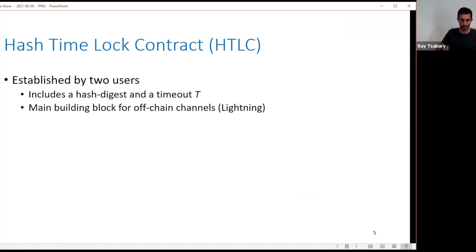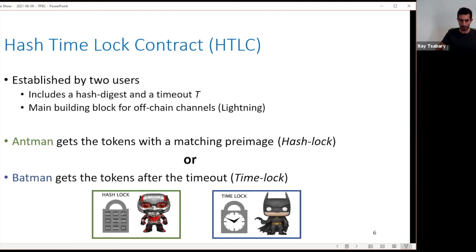HTLCs, which stands for hash time lock contracts, are contracts established by two users — I'll refer to them as Antman and Batman. They include the hash digest of some cryptographic hash function and a timeout T measured in blocks. They're the main building block for many cryptocurrency systems like the Lightning Network, atomic swaps, contingent payments, and so on. The predicate of an HTLC looks like this: either Antman gets the HTLC tokens by providing a matching preimage for the hash digest, or Batman gets the tokens after the timeout elapses — a hash lock and a time lock respectively.